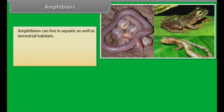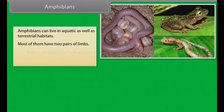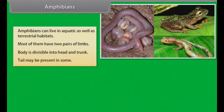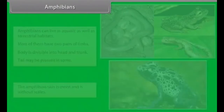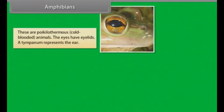Amphibians can live in aquatic as well as terrestrial habitats. Most of them have two pairs of limbs. Body is divisible into head and trunk; tail may be present in some. The amphibian skin is moist and without scales. These are poikilothermous, that is, cold-blooded animals.